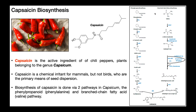This is the biosynthesis of capsaicin. To get capsaicin, we start with amino acids — phenylalanine, one of our 20 proteinogenic amino acids, and valine, one of our three branched chain amino acids. There are two separate pathways that ultimately converge at one terminal enzyme. The pathway on the left is called the phenylpropanoid pathway, which converts phenylalanine into vanillylamine.